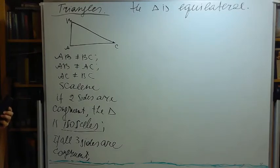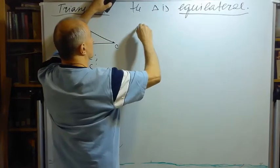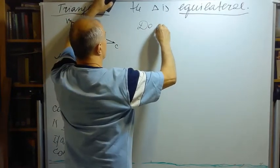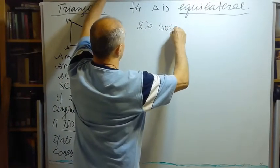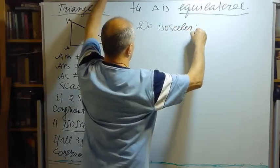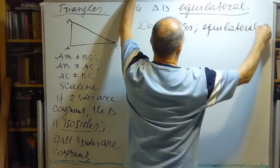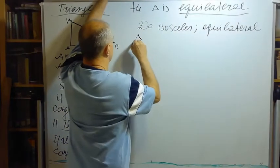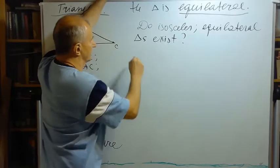What else about triangles? Do they exist? Do equilateral triangles exist?